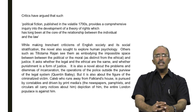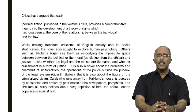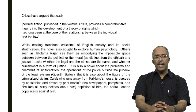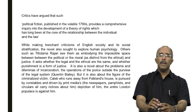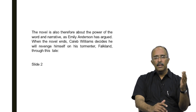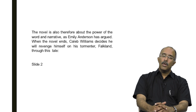Other critics such as Tilottama Rajan see such novels as embodying the impossible space between the political and the moral, between the questions of justice and the questions of the ethical. These novels ask, according to Rajan, whether the legal and the ethical are the same and whether punishment is a form of justice. It is also a novel about the problems and dilemmas of imprisonment and the operations of the police outside the purview of the legal system. It is about the figure of the criminalized victim — the vandal, the fugitive from justice and the criminal are key characters. Caleb, the title character, who runs away from Falkland's house, is pursued by constables and driven by print media, with the entire London populace against him.